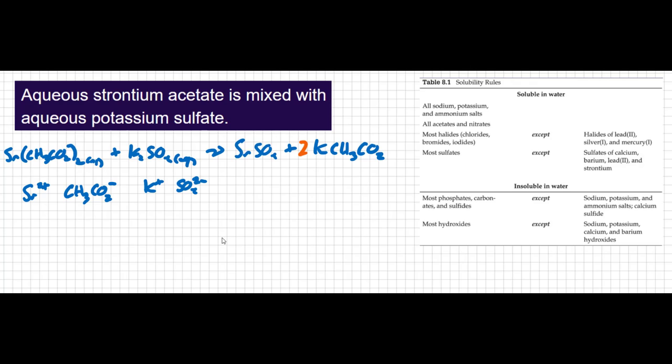Now we can look at the solubility rules to predict the states of matter of our products. The first solubility rule says that all sodium, potassium, and ammonium salts are soluble in water. Potassium acetate is a potassium salt — it's soluble in water. The second rule says all acetates and nitrates are soluble in water, and potassium acetate is an acetate. Both rules confirm it's soluble, so we put AQ next to potassium acetate.